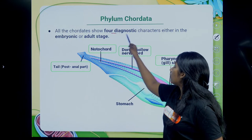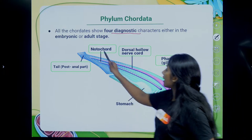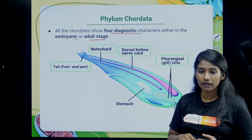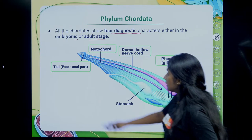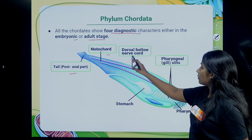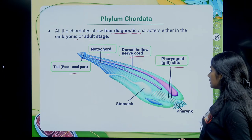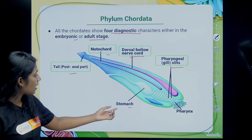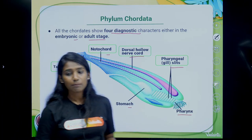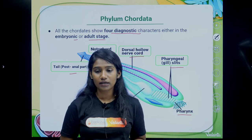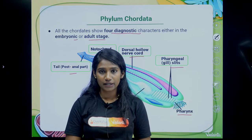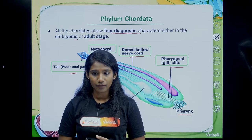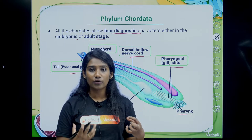All chordates show four diagnostic characteristics, either in the embryonic or adult stage: tail, notochord, dorsal hollow nerve cord, gill slits, and pharynx. The notochord is a rod-like structure on the dorsal side between the dorsal hollow nerve cord and the alimentary canal — it provides support to the body. The nerve cord of Chordata is always hollow and lies dorsal to the notochord.